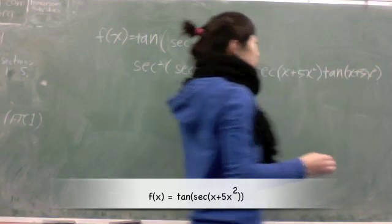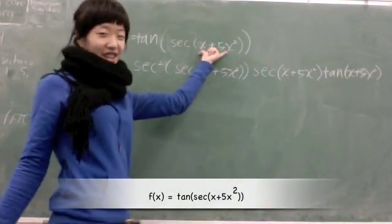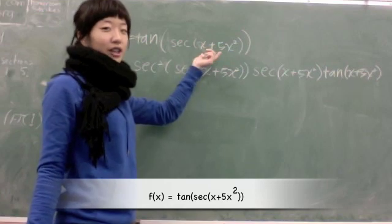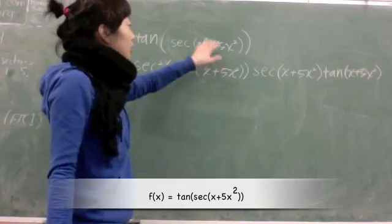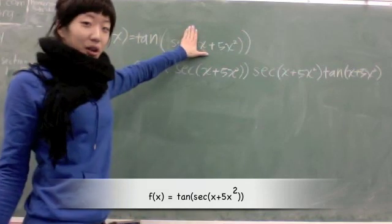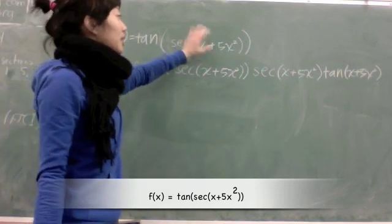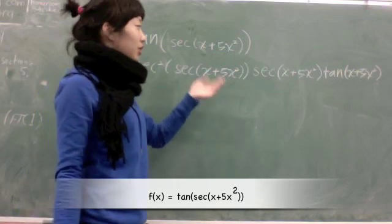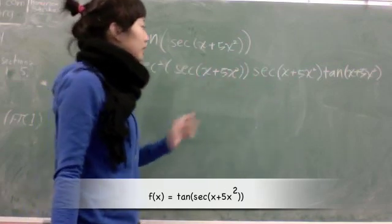But we're not done yet! The inside of it also has to be differentiated. Which is, of course, the derivative of x plus 5x squared is 1 plus 10x. So, we will also add that to the end of our equation: 1 plus 10x.